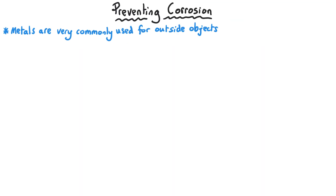We use metals for a huge number of different types of structure and a lot of these are outside. It can be really important that we prevent these structures from corroding because over time metal structures will become weaker and weaker. Something like a bridge can be particularly dangerous if it has corroded, because it can become weaker and there is a risk that it will break and cause an accident.